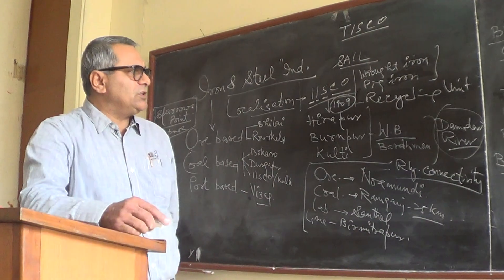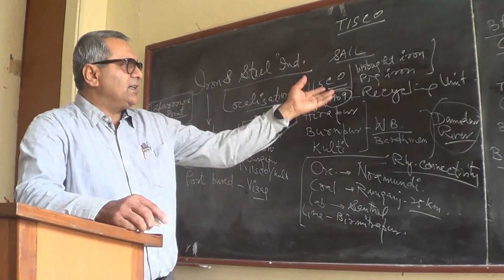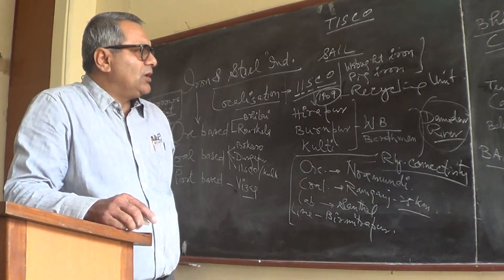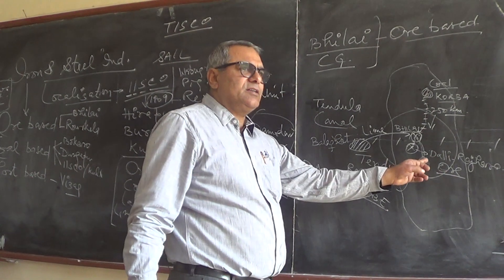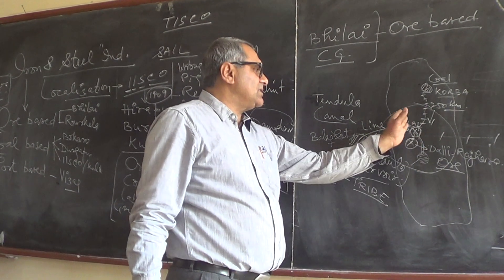Korba, they import the coal. Dalli Rajhara, they import the iron ore. And labor is there. Water they shift from the Tandula tank and they have constructed a canal.